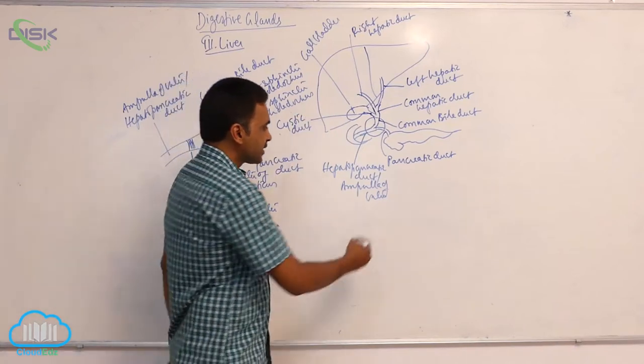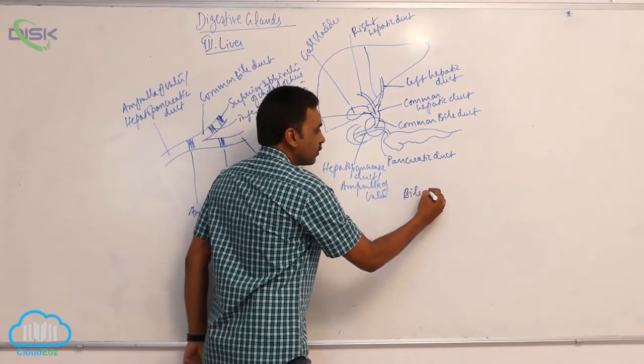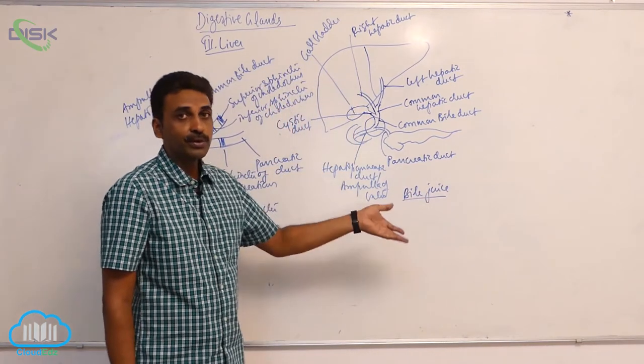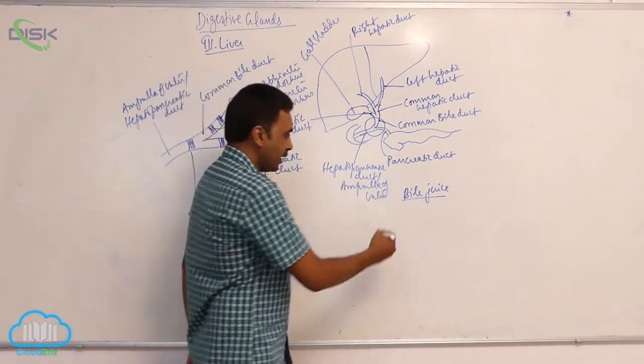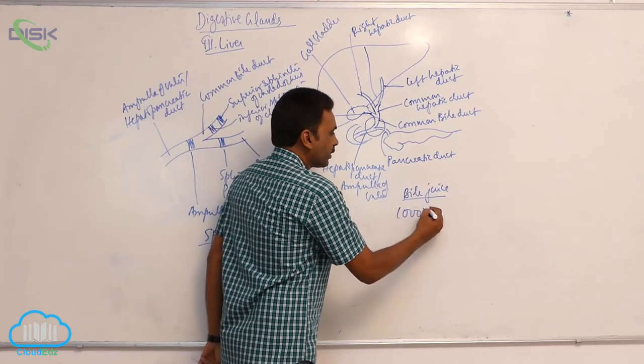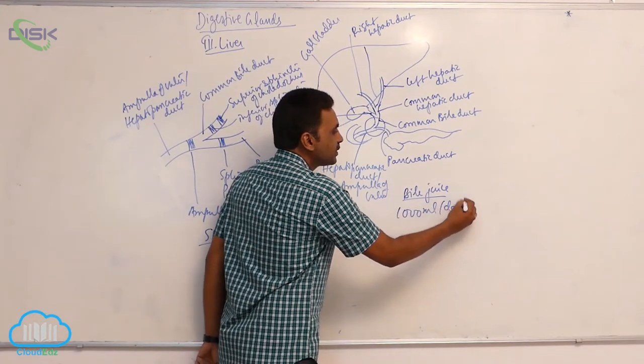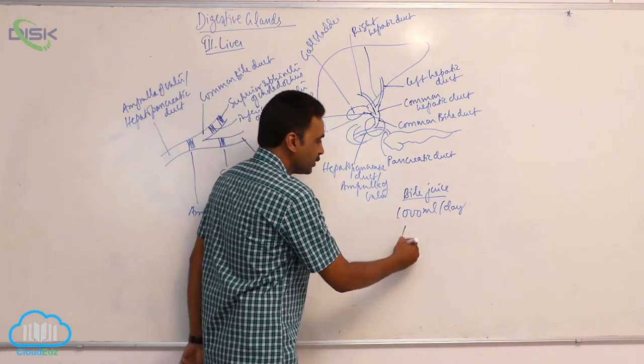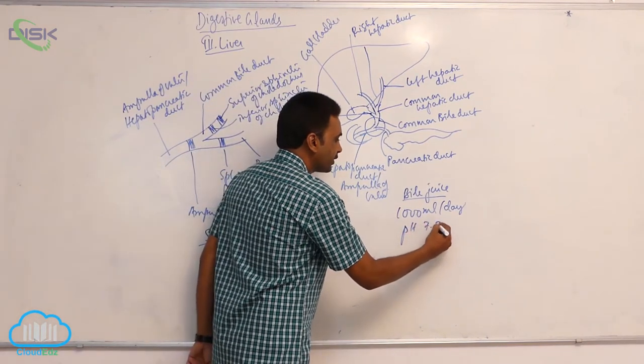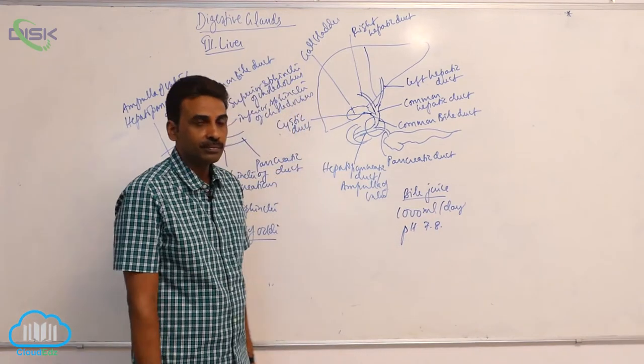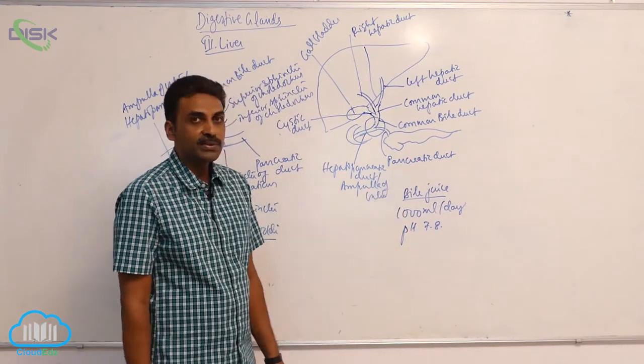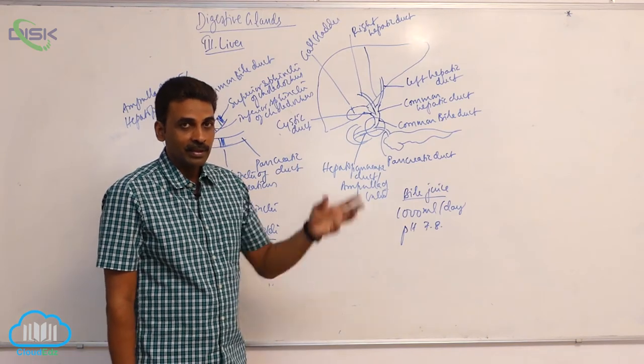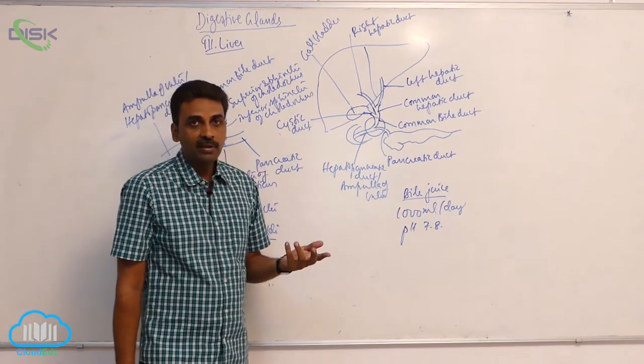The liver produces bile juice. Daily, one thousand milliliters of bile juice is produced per day. The pH of bile juice is 7.8. It is alkaline.